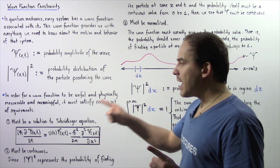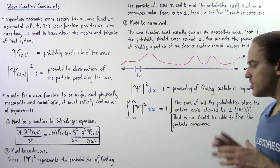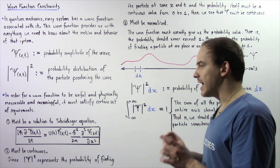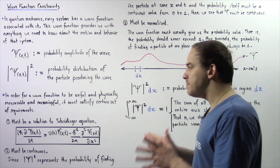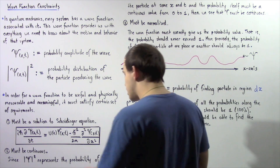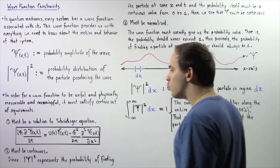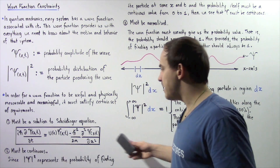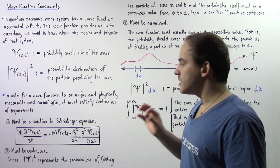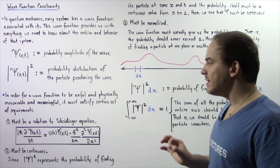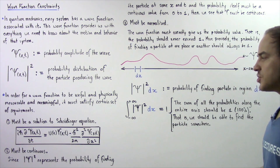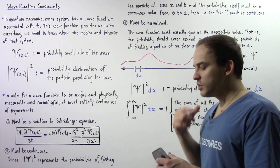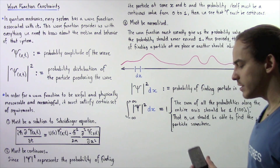Requirement number 1: the wave function must be a solution to Schrödinger's equation — specifically the time-dependent Schrödinger equation. What exactly do we mean by requirement 1?